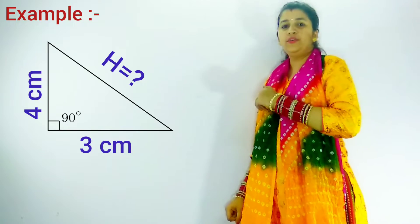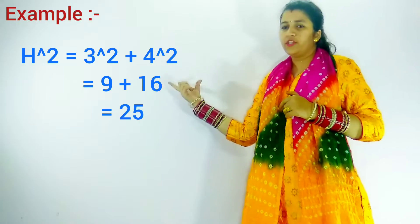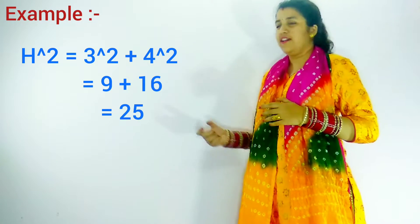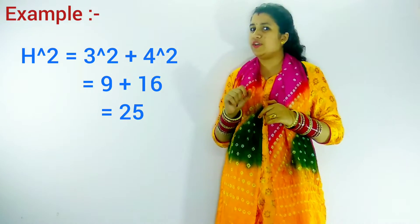How will we do this? We have hypotenuse squared equals square of 3 plus square of 4. Square of 3 is 9 and square of 4 is 16, so 16 plus 9 is 25.